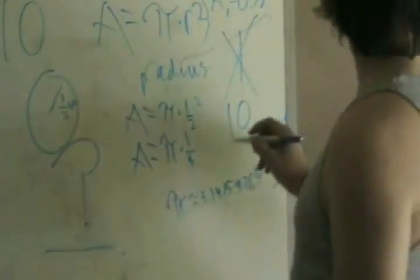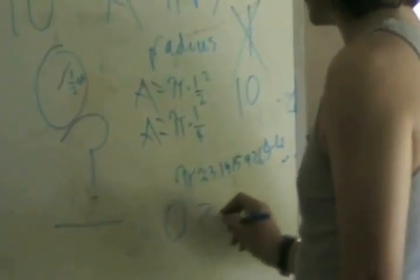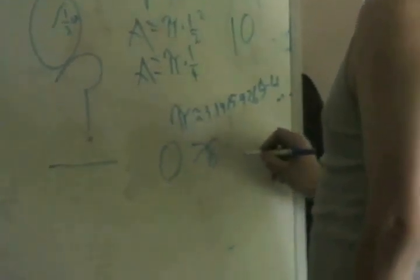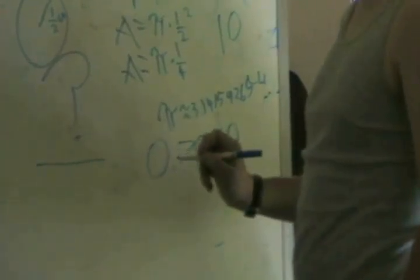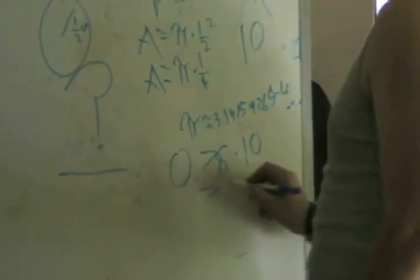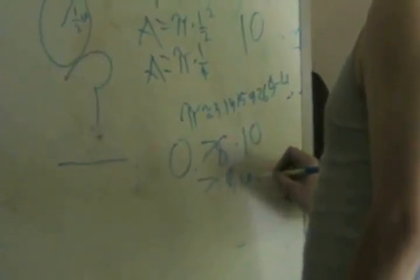So, we take our answer of 0.78 and multiply it by 10, which is 10 times 1. Now, we are then faced with 7.8 inches. And that is the answer to our problem.